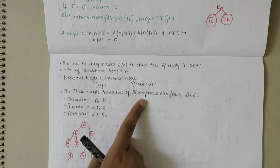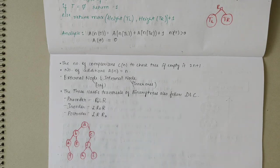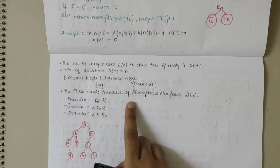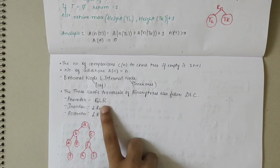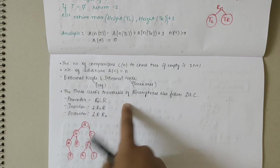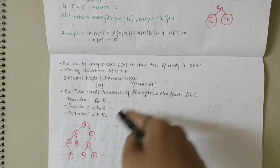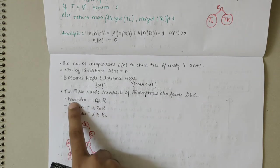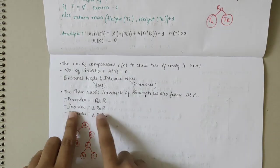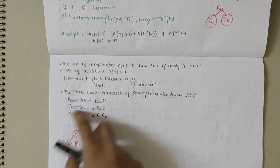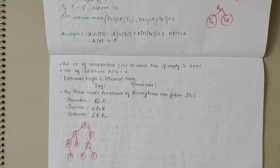Binary trees also have classic traversals that follow the divide and conquer approach. In preorder traversal, the root is visited first, then the left subtree, then the right subtree (Root-Left-Right). In inorder traversal, the order is Left-Root-Right. In postorder traversal, the root is visited after both the left and right subtrees (Left-Right-Root). For a given binary tree, let's write out the preorder, inorder, and postorder traversals.